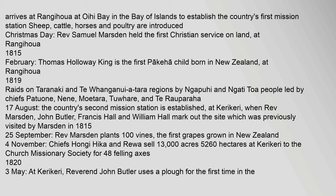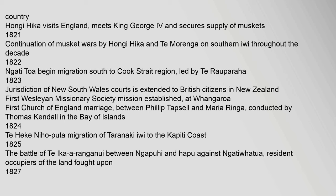1820, 3 May: At Karikari, Rev. John Butler uses a plough for the first time in the country. Hongi Hika visits England, meets King George IV and secures supply of muskets. 1821: Continuation of musket wars by Hongi Hika and Te Moringa on southern Iwi throughout the decade.